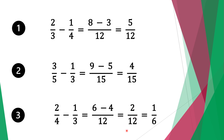Six minus four is two. Move along the twelve. Now two and twelve are both divisible by two: two divided by two is one, twelve divided by two is six. So our solution is one over six.